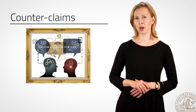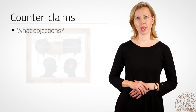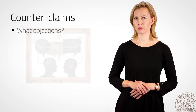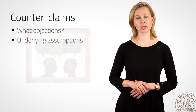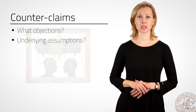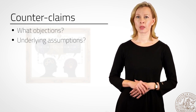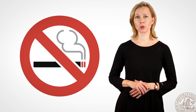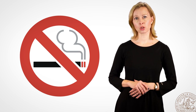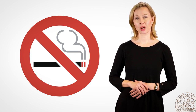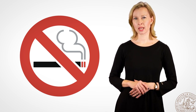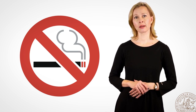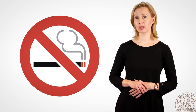In constructing an argument, you might also need to consider possible counterclaims. What objections might your specific target audience have to your main claim and to the various subclaims? And what objections might they have to the underlying assumptions that are not explicitly stated in your text, but are still assumed to be connected to your claims? If you say, for example, that it is justified to ban smoking in all public areas because smoking causes lung cancer, the unstated assumption is that lung cancer is a bad thing. Your target audience might then attack either your claim that smoking should be banned because it causes lung cancer, or the unstated assumption that having lung cancer is a bad thing.